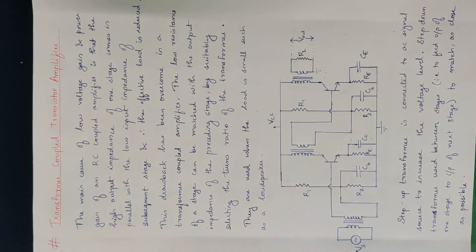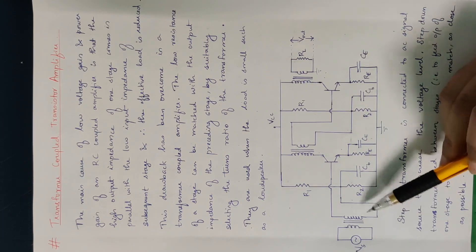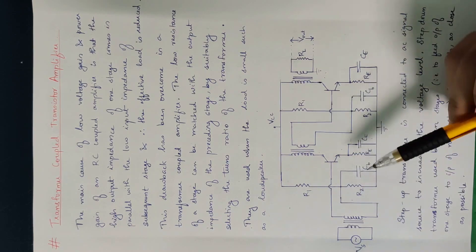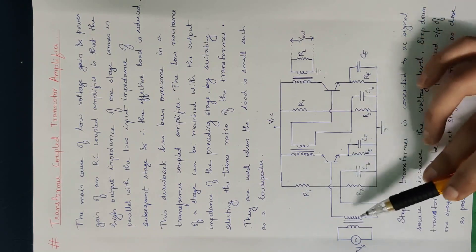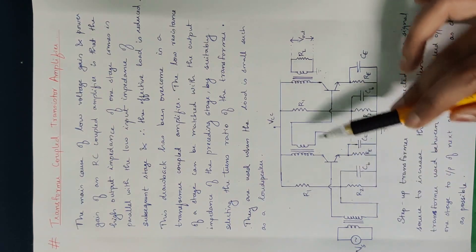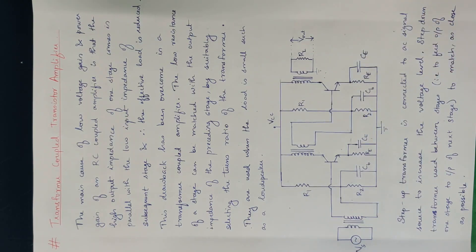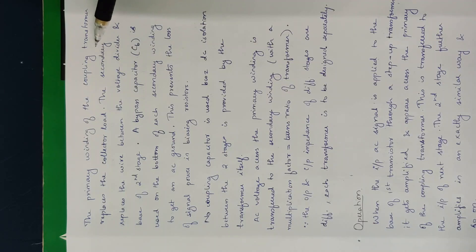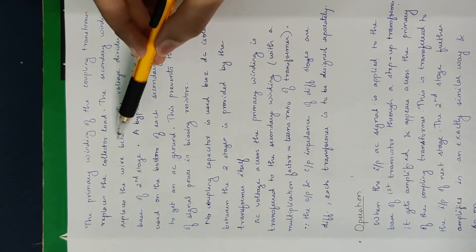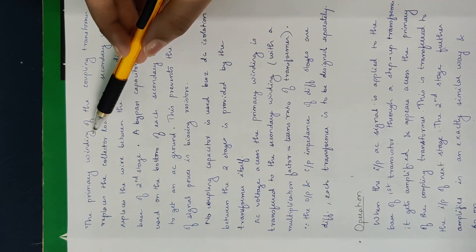Power loss will be i²R loss. We step up the current to reduce transmission loss. After the step-down, we step down the voltage. The primary winding of the coupling transformer replaces the collector load — that is, the collector resistance RC is replaced by the primary winding.